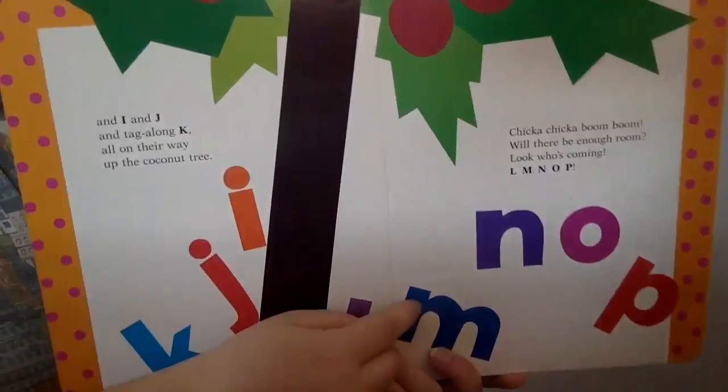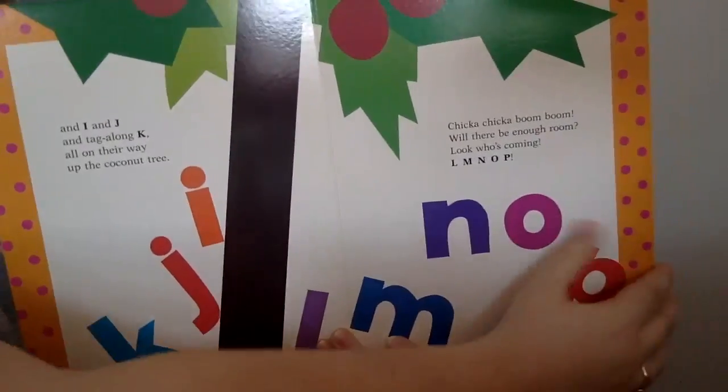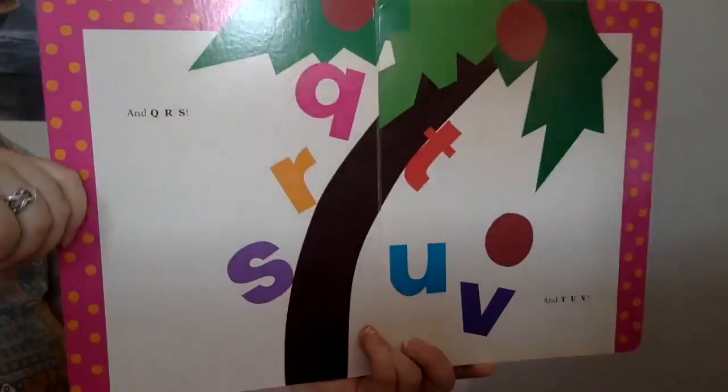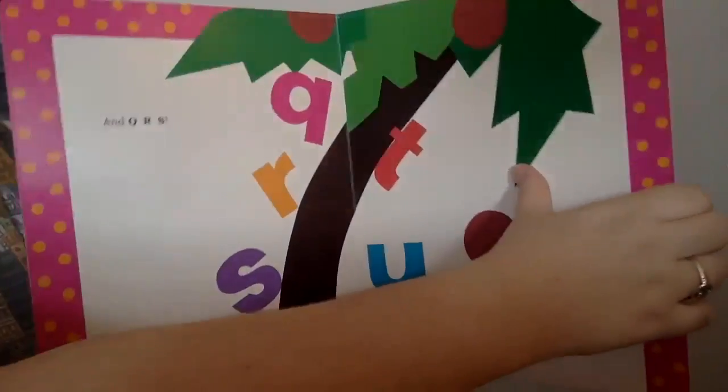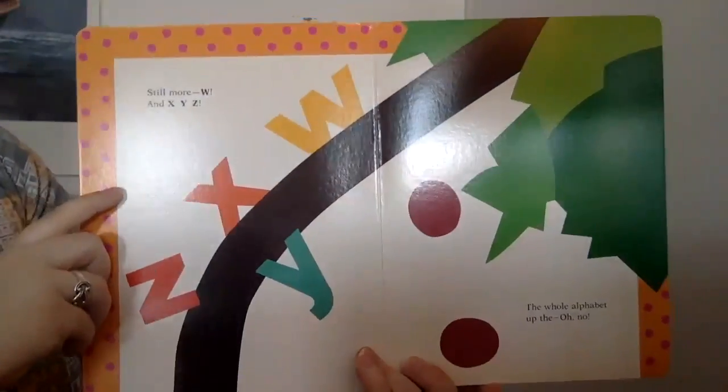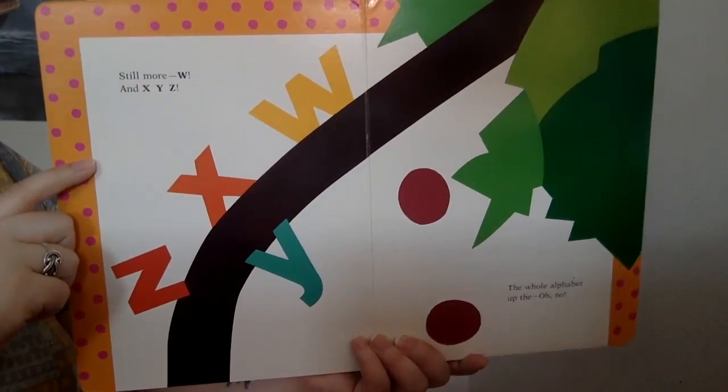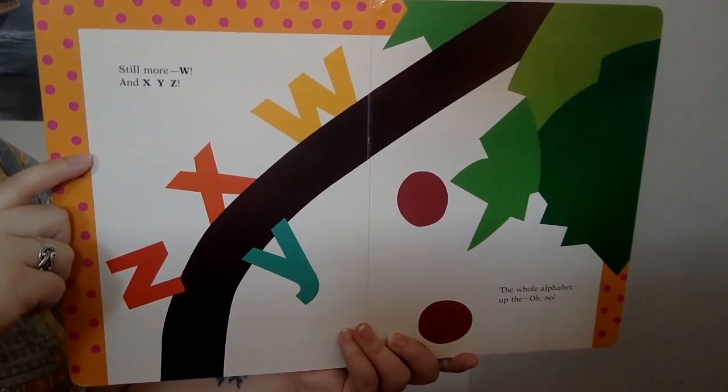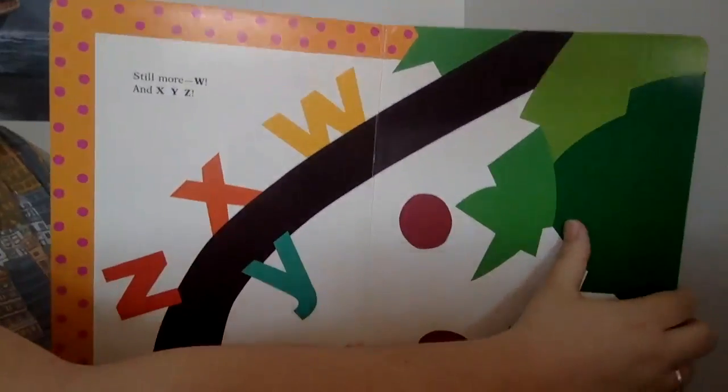Look who's coming. It's L-M-N-O-P and Q-R-S and T-U-V. Still more W-X-Y-Z. The whole alphabet up the, oh no, look it's bending over. What's going to happen?